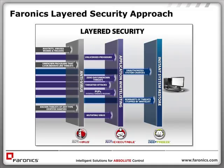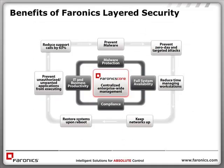To bring the Faronics vision of a layered security approach together, we have three layers to deter security threats. The primary layer: antivirus, blocking known threats. The secondary layer: anti-executable, ensuring that only programs you deem worthy run in your environment. The tertiary layer: Deep Freeze — the reboot-to-restore solution, bringing your machine back to its pristine state in case users make unauthorized system changes not stopped by the first two layers. The benefits include reducing support calls by up to 63% on average, preventing malware and zero-day attacks, reducing time managing workstations, keeping networks up and running, restoring systems to pristine state on reboots, and ensuring unwanted applications never arrive in your environment.